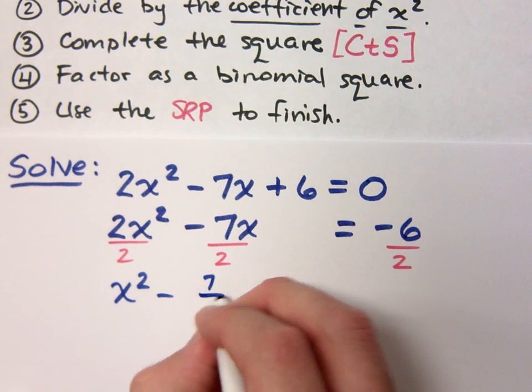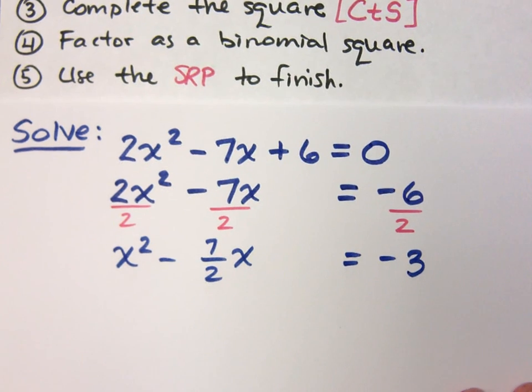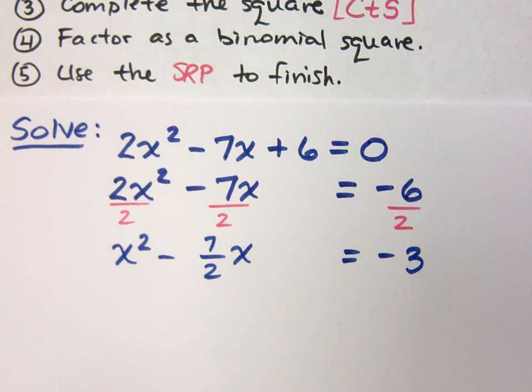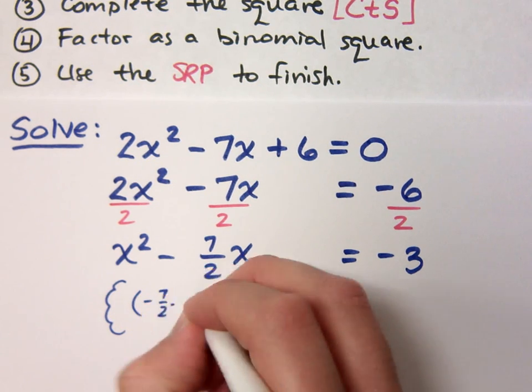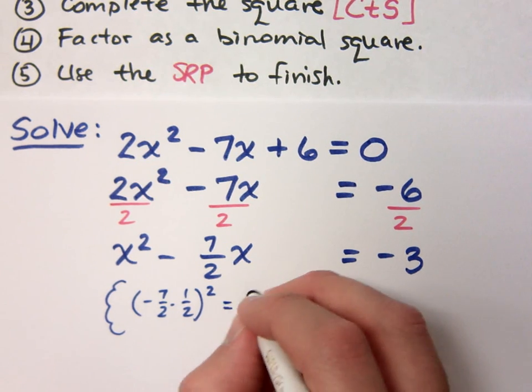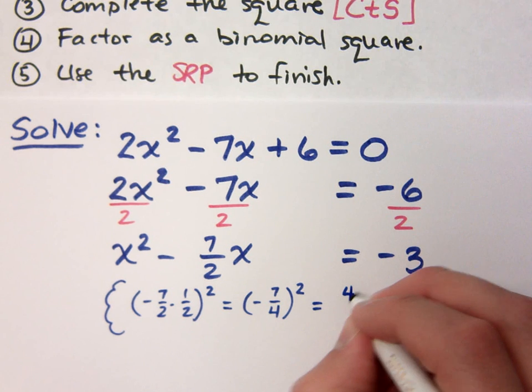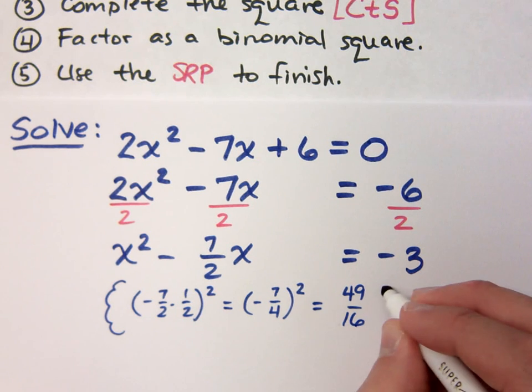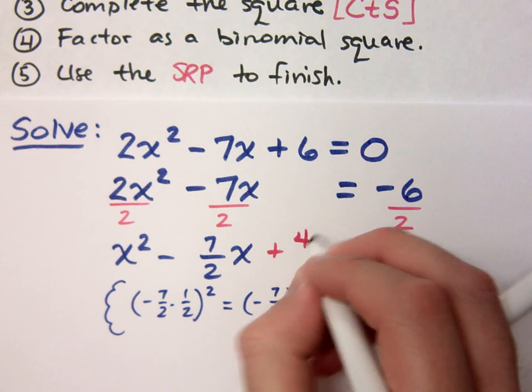I have x squared minus 7 halves x is equal to negative 3. Now the third step is to complete the square. This is where I've got to figure out half of this guy squared and add it to both sides. So in my little thought bubble down here, I have negative 7 halves times 1 half squared. So what will I add to both sides? 49 over 16.